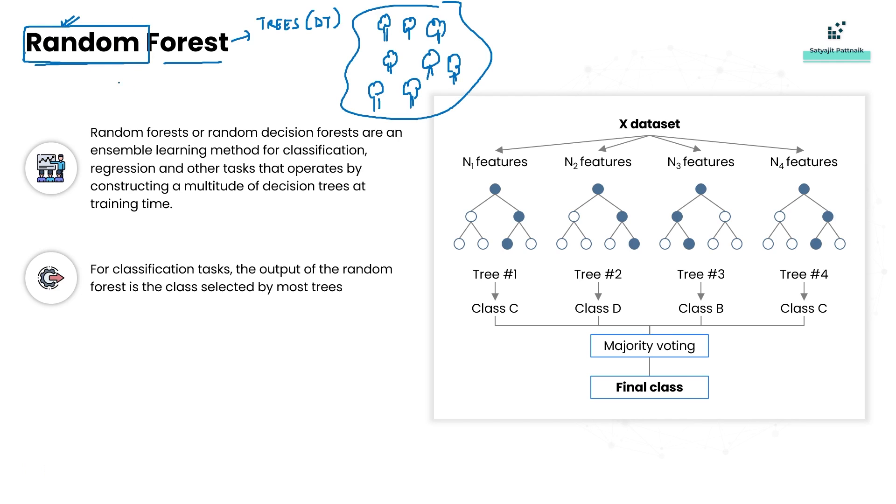So random forests or random decision forests are an ensemble learning method - ensemble here means it's a hybrid learning model for classification, regression, and other tasks that operates by constructing a multitude of decision trees at training time. For classification tasks, the output of the random forest is the class selected by most trees.